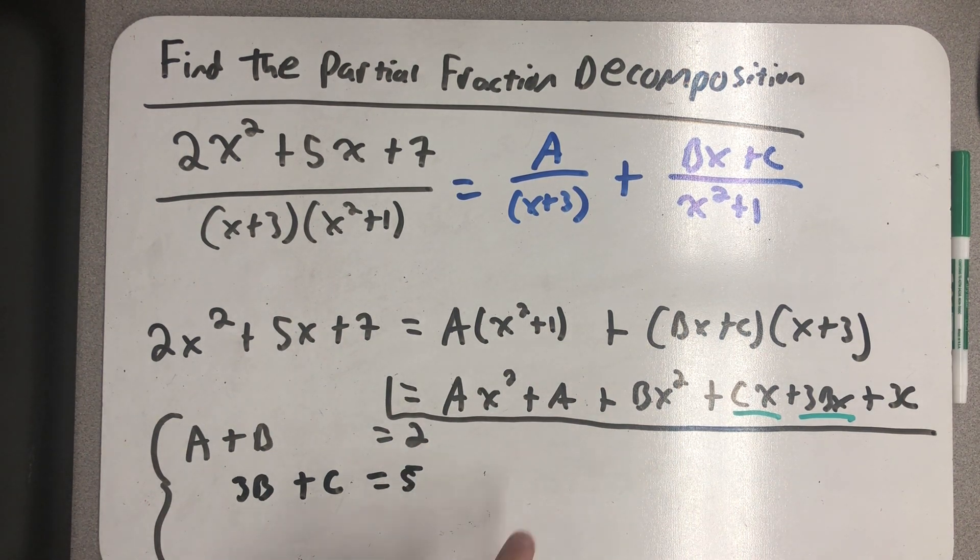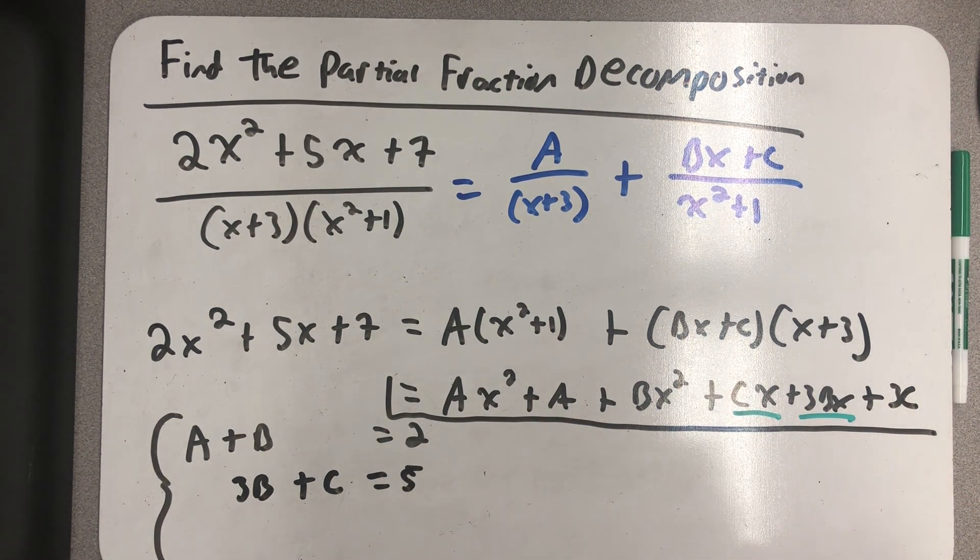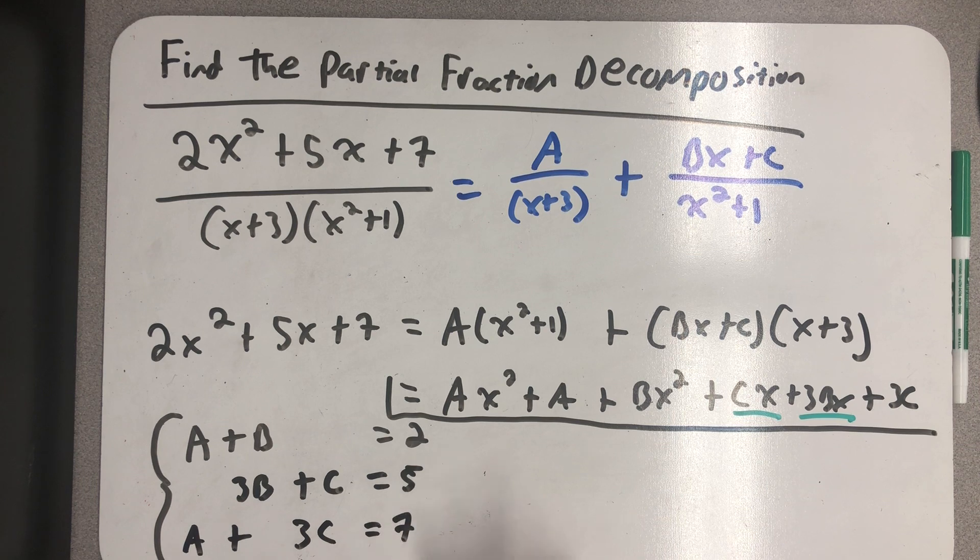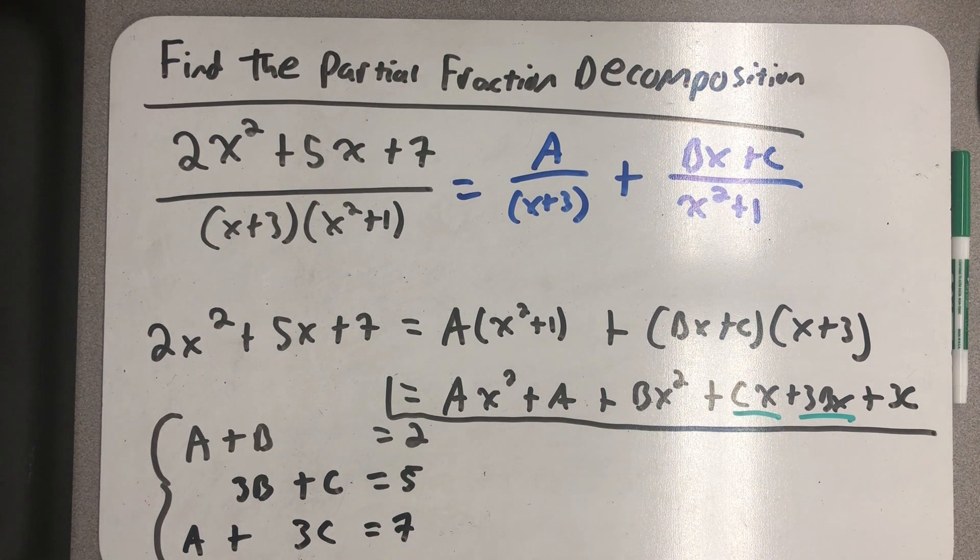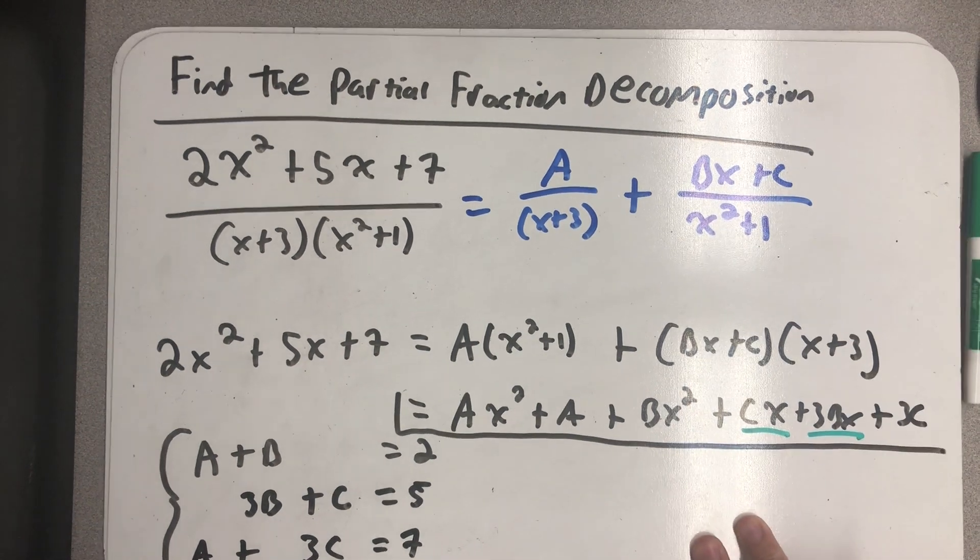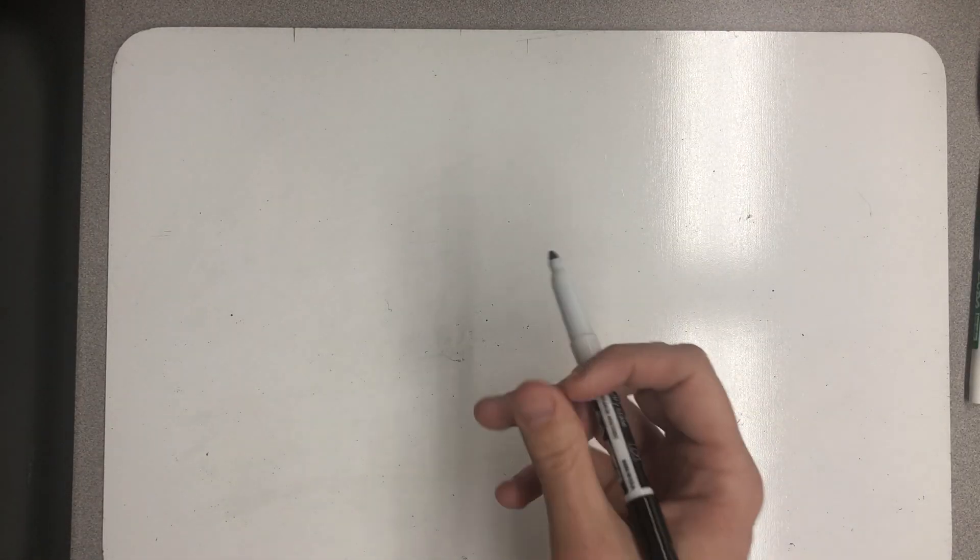And then finally, the constants, a plus 3c, does have to add up to 7. And so, now I have a system of three equations and three variables that I need to solve. I'm going to rewrite that system on this next board.